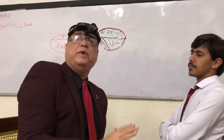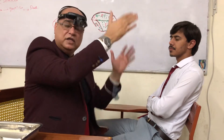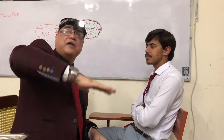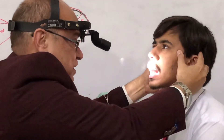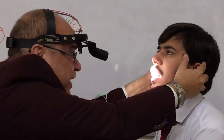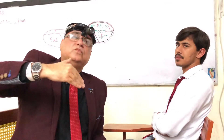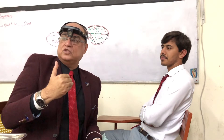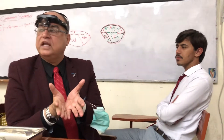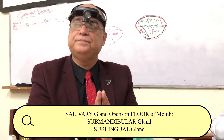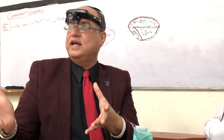Just ask the patient to open the mouth and look for everything — the roof for the hard palate, cheek mucosa, and the tongue in its normal anatomical position. Then ask the patient to touch the hard palate with the tip of the tongue so that you can see the ventral surface of the tongue and the floor of the mouth. The submandibular and sublingual salivary glands open in the floor of the mouth.